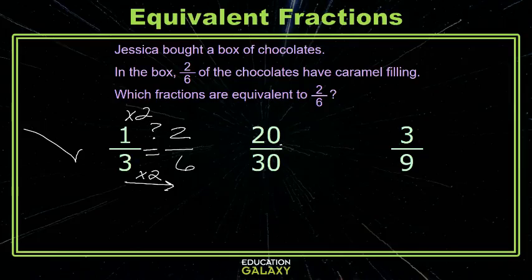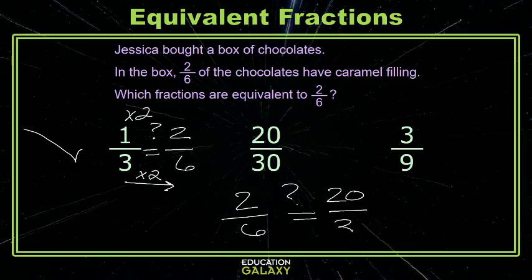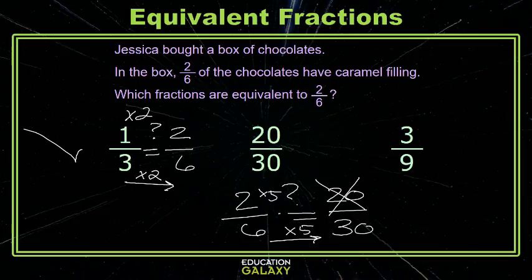How about twenty-thirtieths? Let's write that down here so you can see a little better. Is two-sixths equal to twenty-thirtieths? Well, how do I get from six to thirty? I multiply by five. If I multiply two by five, I get ten, not twenty. That middle one is not correct.